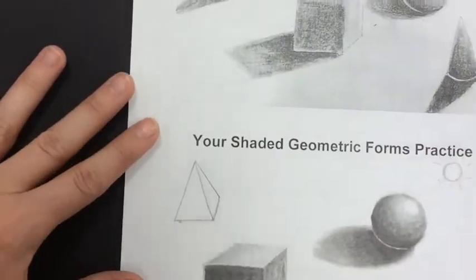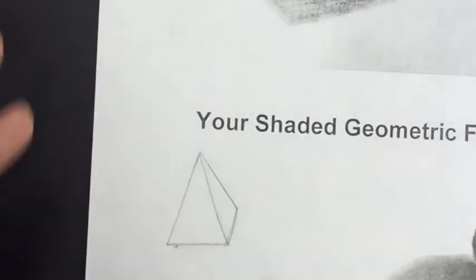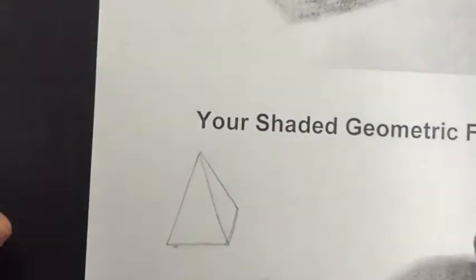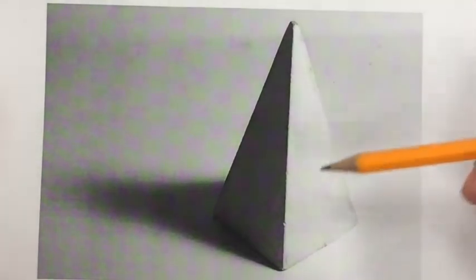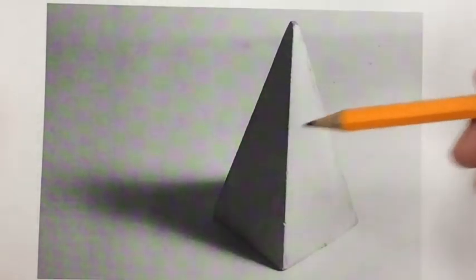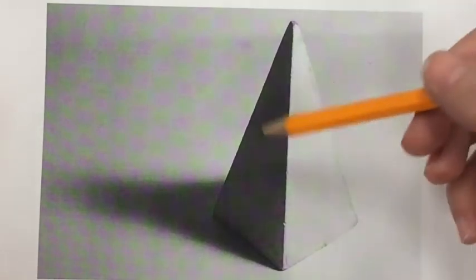Now remember, my light source is to the right. So for this pyramid, same thing that we've talked about before. It has a very defined side, so it has some very crisp edges. So one side is definitely going to be lighter, and one side is definitely going to be darker. The side closest to the light will be lighter. The side opposite the light source will be darker. The cast shadow is kind of a distorted triangle shape that stretches out from the base.